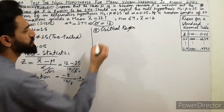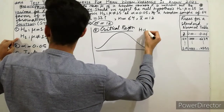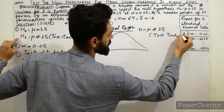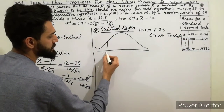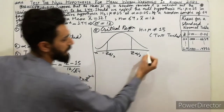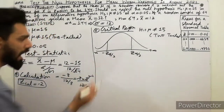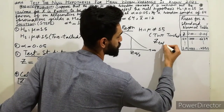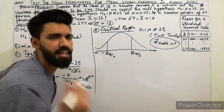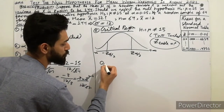In this critical region, because this is a two-tailed test — H1 is mu does not equal 15 — the rejection regions are on both tails. So we write minus z-alpha/2 on the left tail and plus z-alpha/2 on the right tail. This is the shape of the normal distribution, from negative infinity to positive infinity. Now we need to calculate the z-table value.